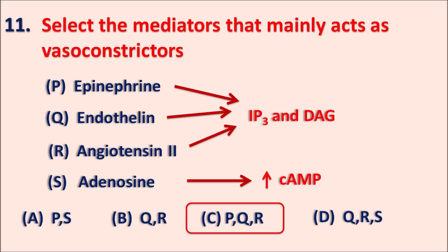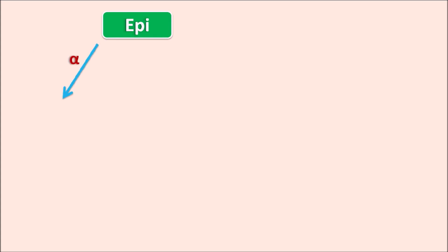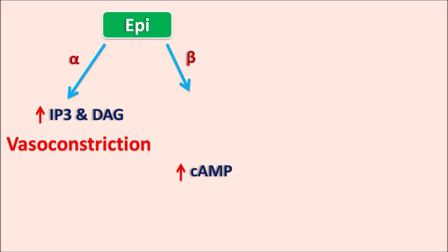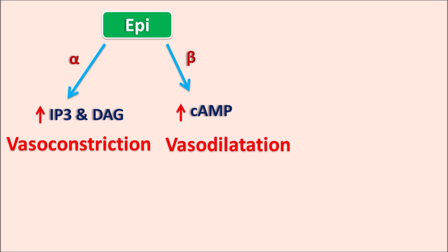Epinephrine can produce both vasoconstriction as well as vasodilatation. Epinephrine acts through alpha-1 receptors, increasing IP3 and diacylglycerol, producing vasoconstriction. It can also act through beta receptors, which are coupled with an increase in cyclic AMP, producing vasodilatation. However, epinephrine mainly produces vasoconstriction on systemic blood vessels and vasodilatation at blood vessels supplying skeletal muscle and the liver. So the main effect of epinephrine is vasoconstriction.